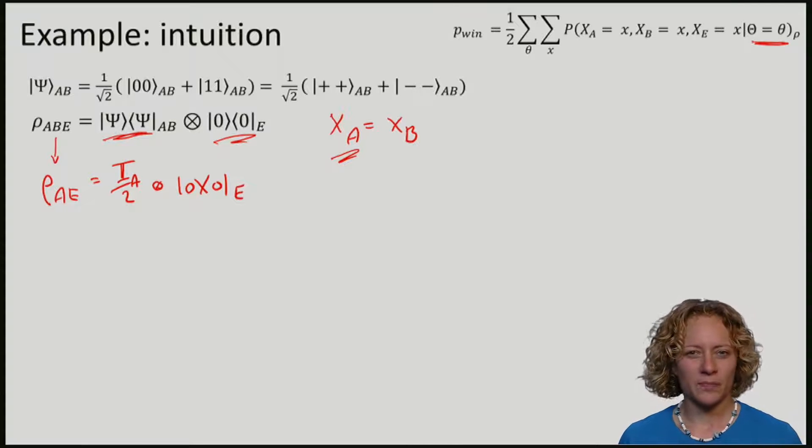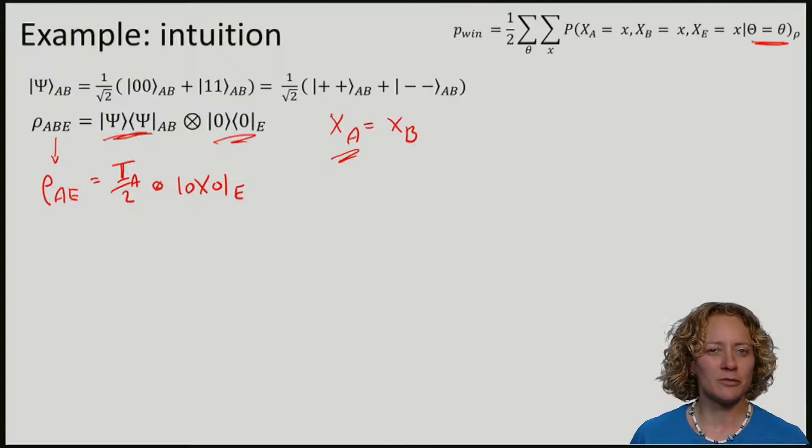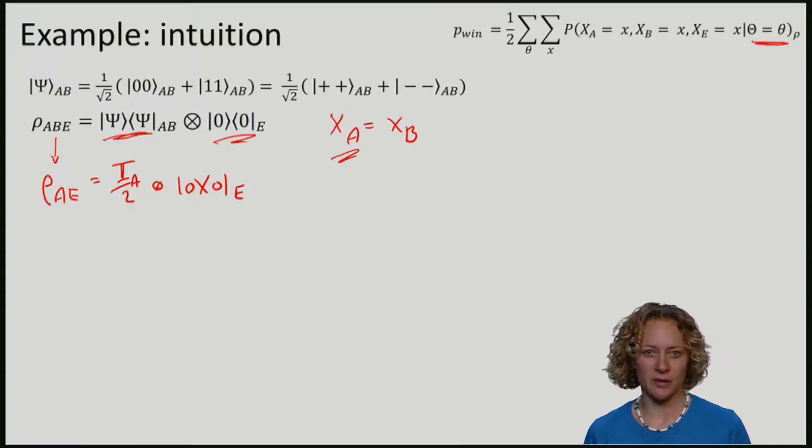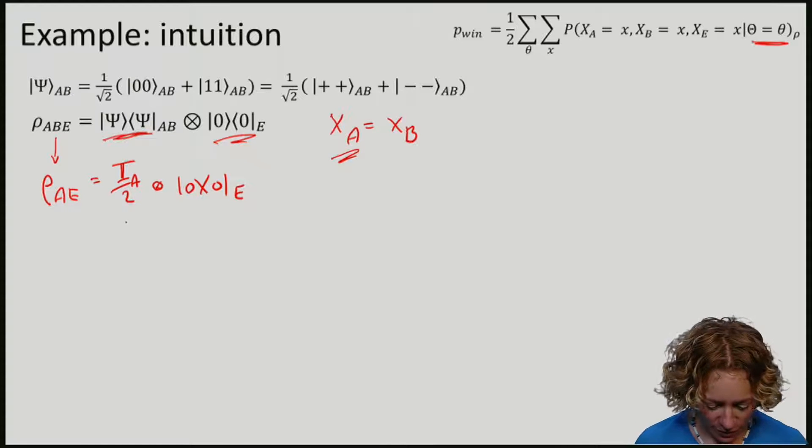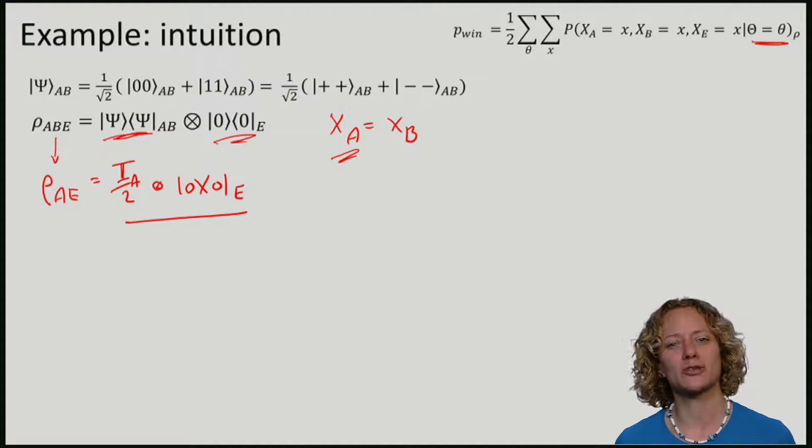So let's confirm that there's no way for Eve to do any better than to just guess a random outcome. Because after all, we are still going to take this state and we are going to measure it in the basis.